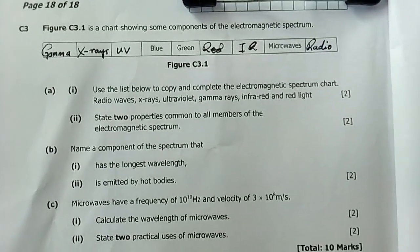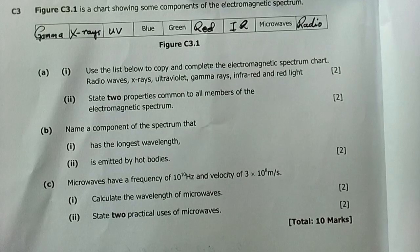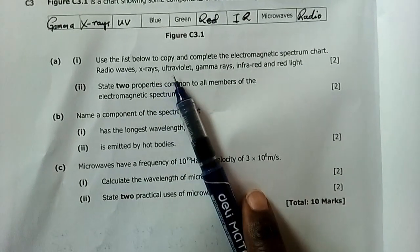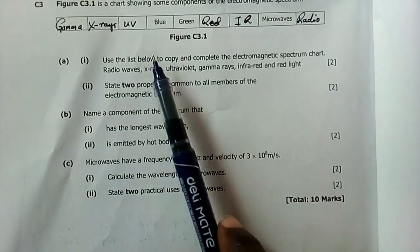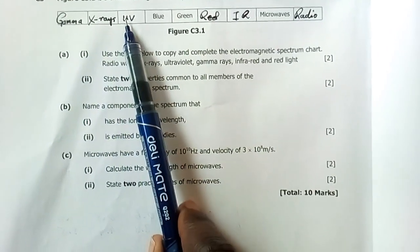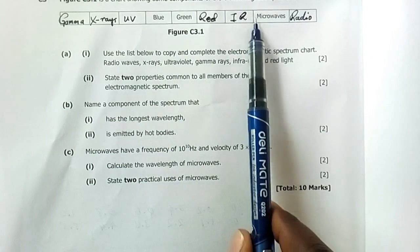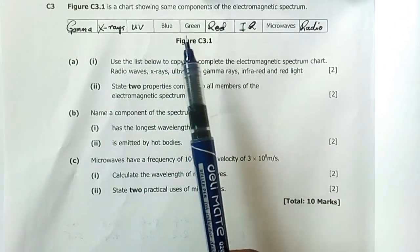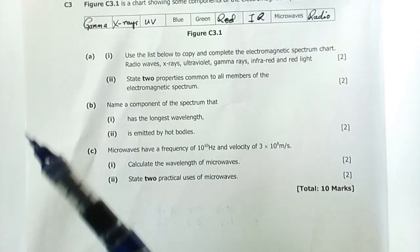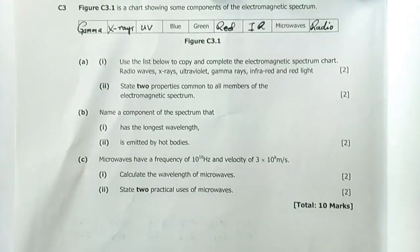Our last question in this paper reads: figure C3.1 is a chart showing some components of the electromagnetic spectrum. A1: use the list below to copy and complete the electromagnetic spectrum chart: radio waves, x-rays, UV, gamma, IR, and red light. So fit them in this table here. Gamma of course has got the highest wavelength, then x-rays, then UV, then blue, then green, then red, then IR, then microwaves, then radio. How did I know this? You look at the given blue, then here there's microwave already. You're supposed to know the visible spectrum - even if the others are not given here, you just have to know how they are in terms of the frequency and also the wavelength. You have to know the spectrum, and so you easily know which one among these has got the highest frequency. Gamma should be in the last box there. So you fit all of these in these boxes.